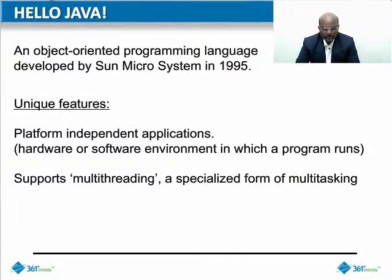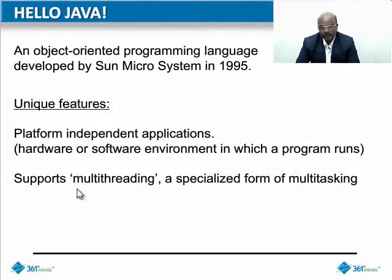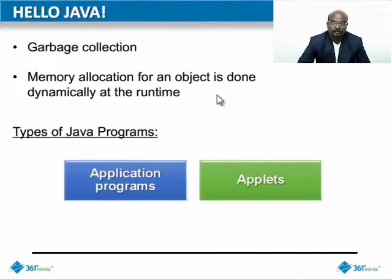Java is an object-oriented programming language which was developed by Sun Microsystems in 1995. The unique features of Java are that it's platform-independent, multi-threading — which is a specialized form of multi-tasking that we'll see in later chapters — and garbage collection, which will free the memory whenever it comes to know that a program is not in need of the memory space.